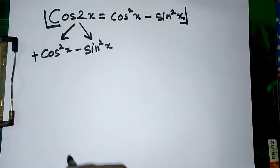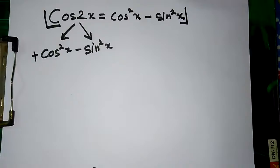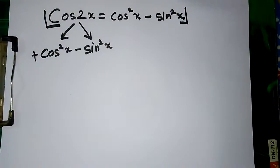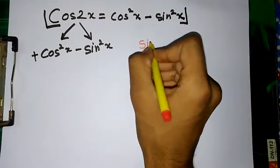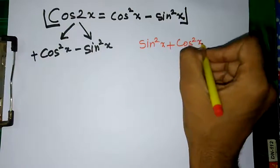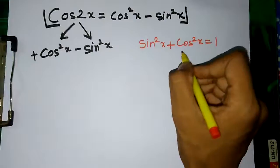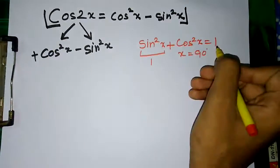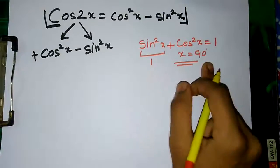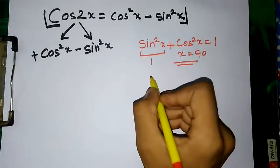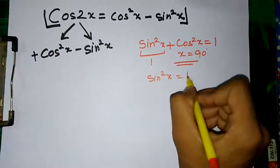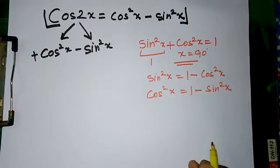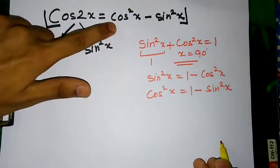The other forms of cos 2x are 2cos²x − 1 and 1 − 2sin²x. To derive these, we use the identity sin²x + cos²x = 1, which we can verify with x = 90°: sin²90° = 1 and cos²90° = 0, giving 1 + 0 = 1. From this identity we get two results: sin²x = 1 − cos²x, and cos²x = 1 − sin²x.